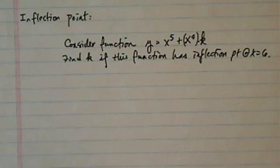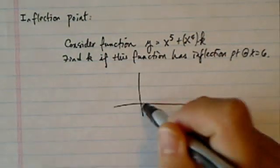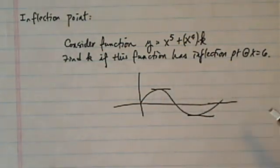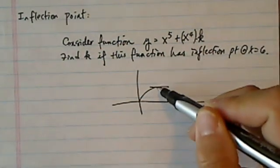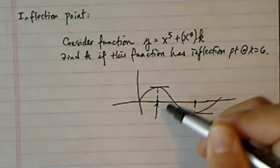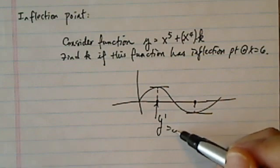Thank you for watching this clip on inflection points. Inflection points are a pretty neat concept in that when we have a curve, just a random curve here, the max and min, or extreme value, happens at when derivative y prime is equal to zero.